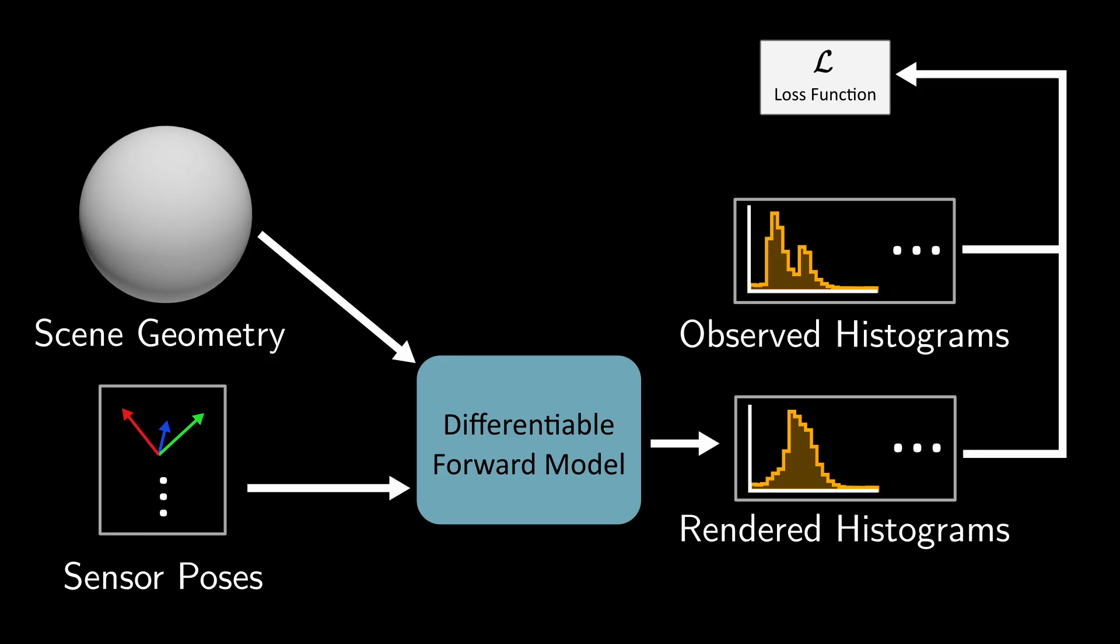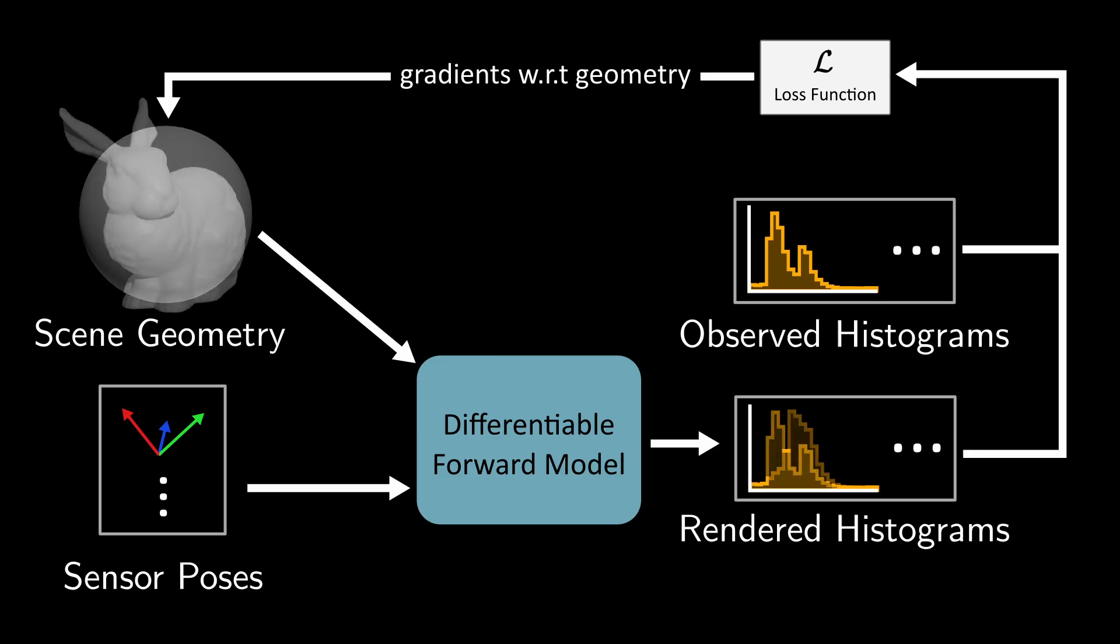We then use gradient descent to optimize the weights of the neural SDF, which implicitly encode the scene geometry. After optimizing the scene for many iterations, the rendered histograms match the observed histograms, and the implicit SDF encodes something that resembles reality.